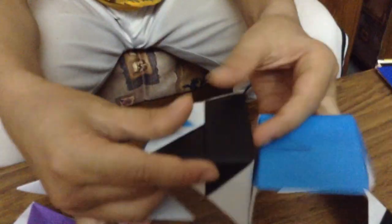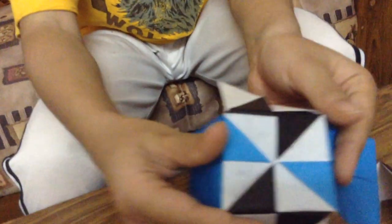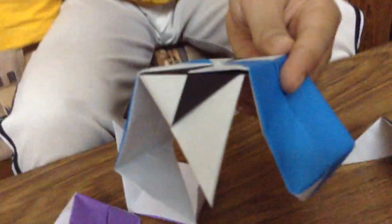Like that. And you do the same thing with the other side, you just insert it into there like that. This is what one side will basically look like. It's like a pattern of white, black, white, blue, white, black, white, blue.